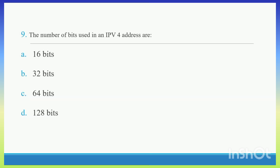Question 9. The number of bits used in IPv4 address are. Option A: 16 bits. Option B: 32 bits. Option C: 64 bits. Option D: 128 bits. The number of bits used in IPv4 address are 32 bits. Right Answer B: 32 bits.